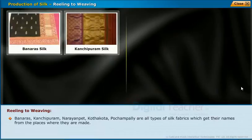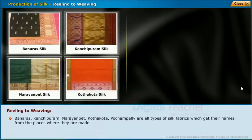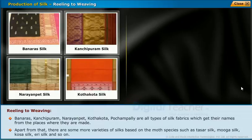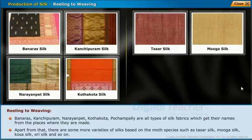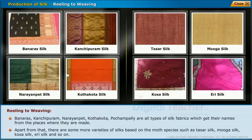Pochampalli is known as the silk city of India, where skillful weavers produce beautiful saris and dress materials. Famous silk fabric types named after their places of origin include Banaras, Kanchipuram, Narayanpet, Kottakota, and Pochampalli. There are also varieties of silk based on moth species, such as Tasar silk, Mooga silk, Kosa silk, and Eri silk.